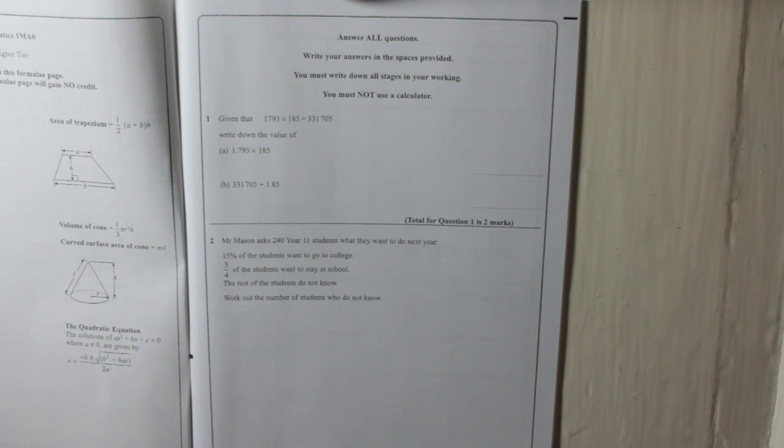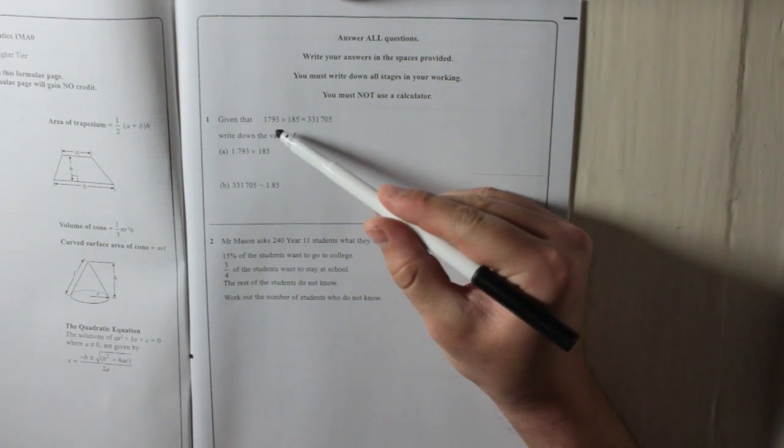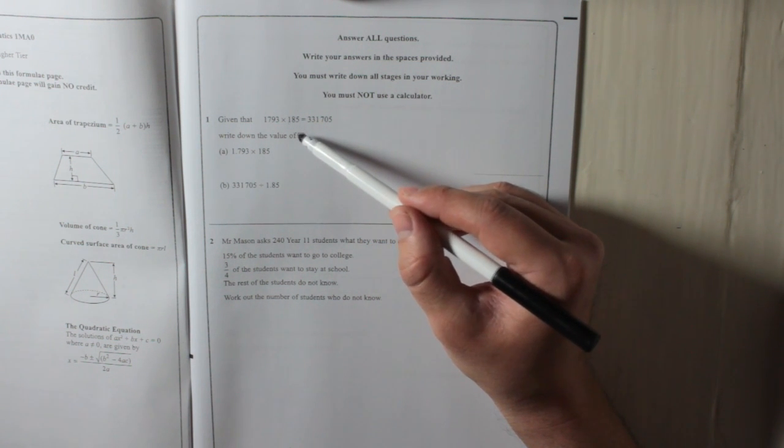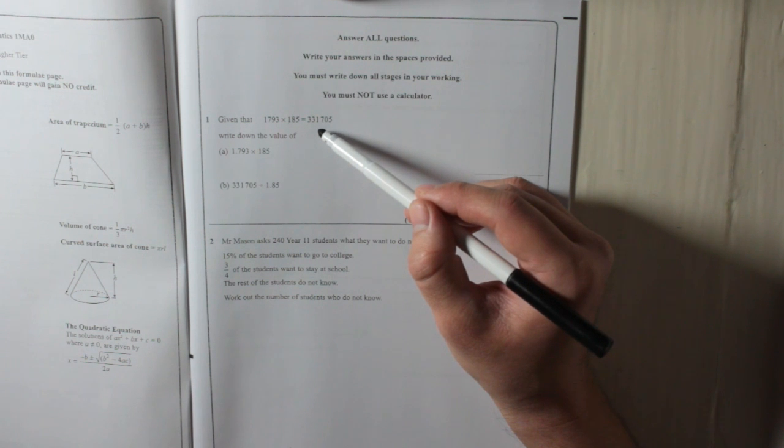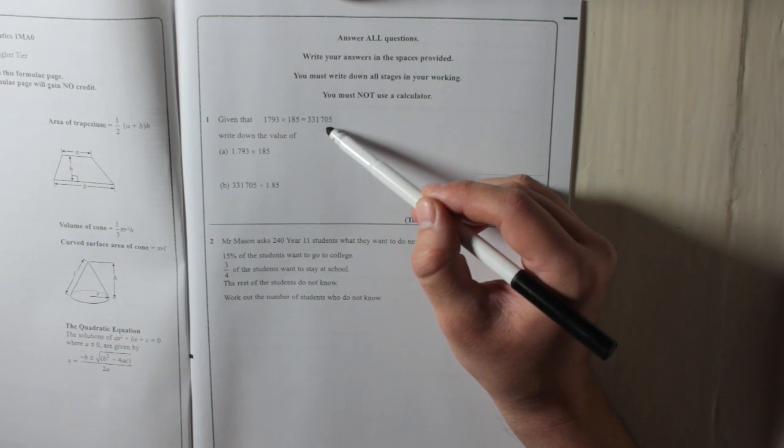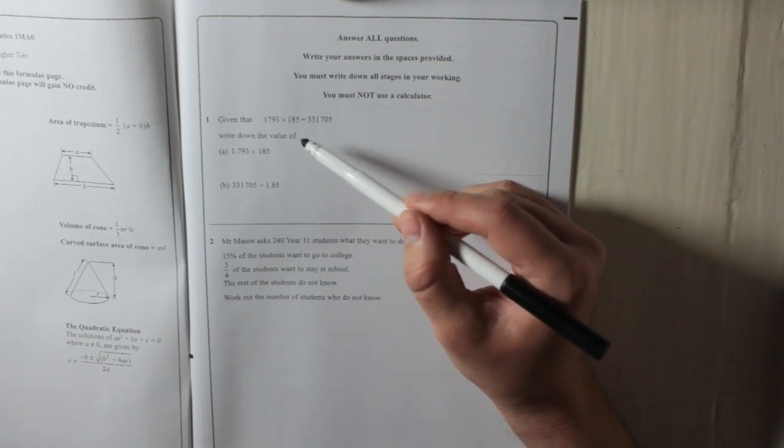Question one. Given that 1793 multiplied by 185 is equal to 331,705, write down the value of...